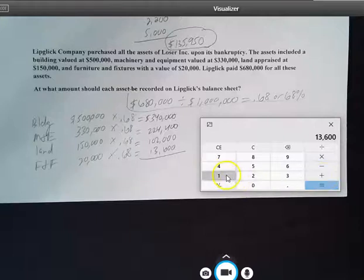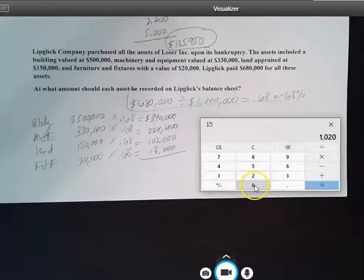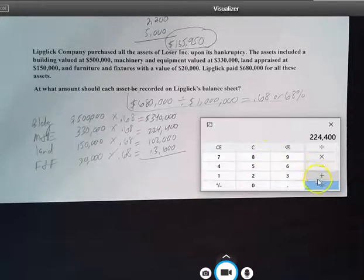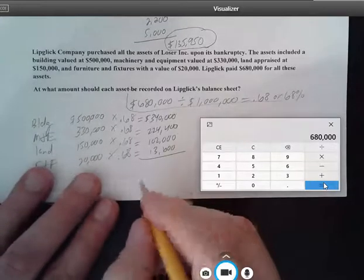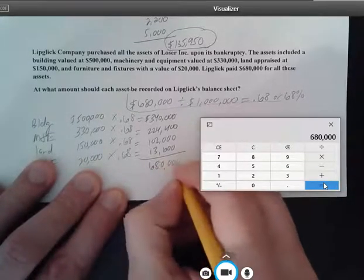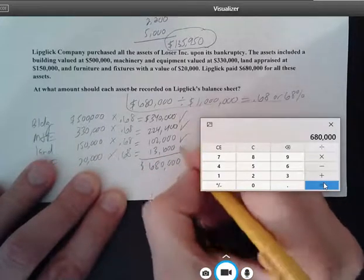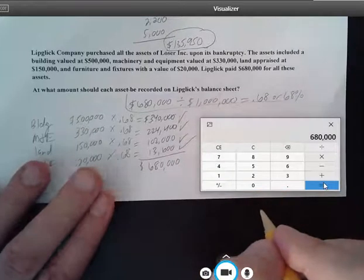So $13,600 plus, we're going to work backwards, $102,000 plus $224,400 plus $340,000 for the building equals $680,000. So all we're doing here is we're just making sure that we actually come up with $680,000. These are our four answers. Okay.